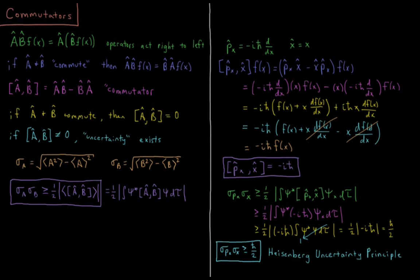This video will discuss commutators of operators and derive the formal Heisenberg uncertainty principle relationship between momentum and position. Okay, let's start out by looking at operators.